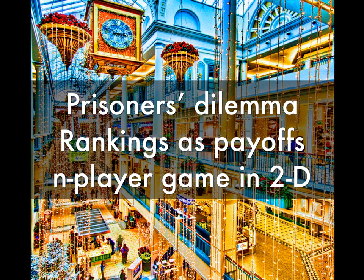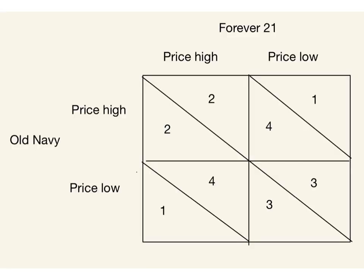I'm going to show you how we can generalize and, in two dimensions, analyze an n-player game like the one we had in class. First, note that this is a Prisoner's Dilemma. This is a game — why is it a game? We have the three elements: the players, Old Navy and Forever 21; the strategies, each store can either price high or price low in a given period; and we've got payoffs.